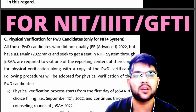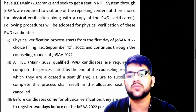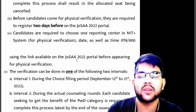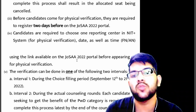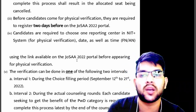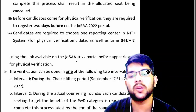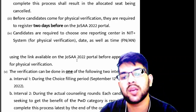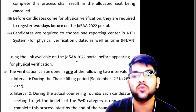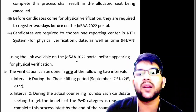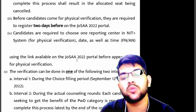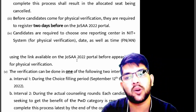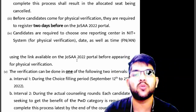Once the physical verification is done, your website will show that you are eligible for the counseling process. You can do it in the first slot (September 12–21) or during the actual counseling rounds when you get a seat. However, if you get a seat in a distant college, you must travel to that college for verification — you cannot choose a college nearest to your home. This is why choice filling is very important.